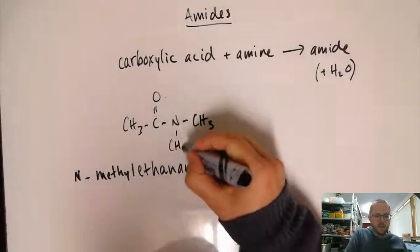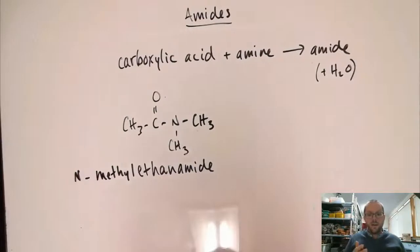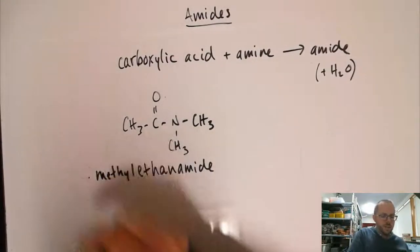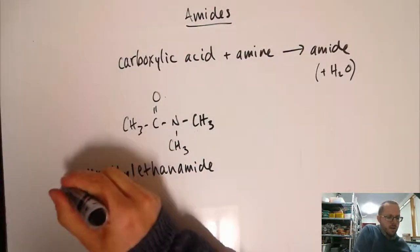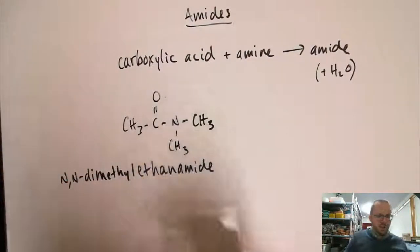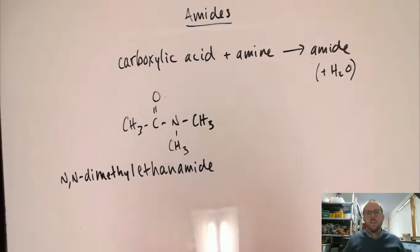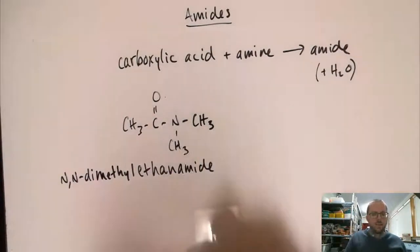If we had another carbon group over here, so we now had a tertiary amide, then we would say, well now it's a dimethyl, but both of them are attached to the nitrogen, so it's N-N-dimethyl ethanamide. That's how we would name this one.